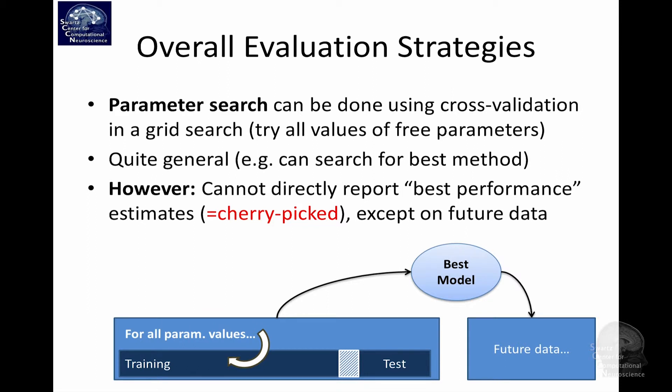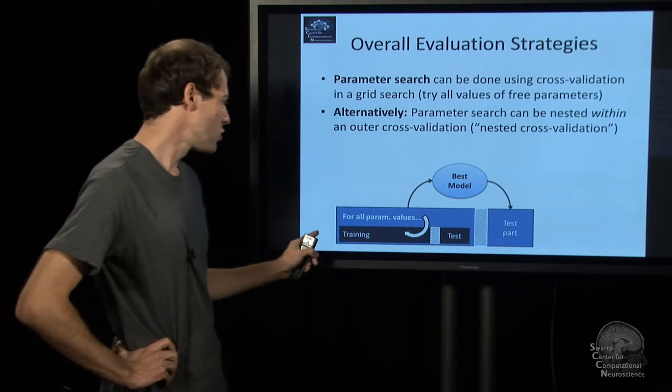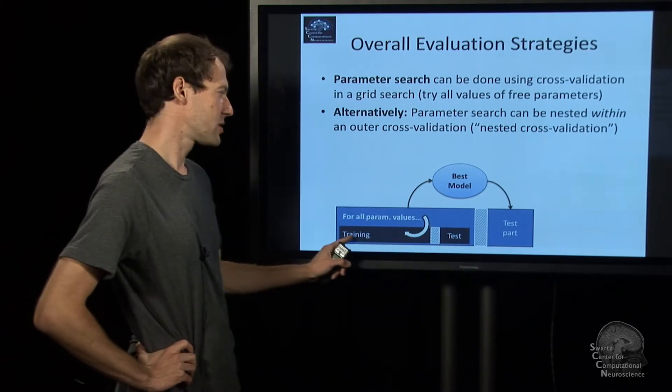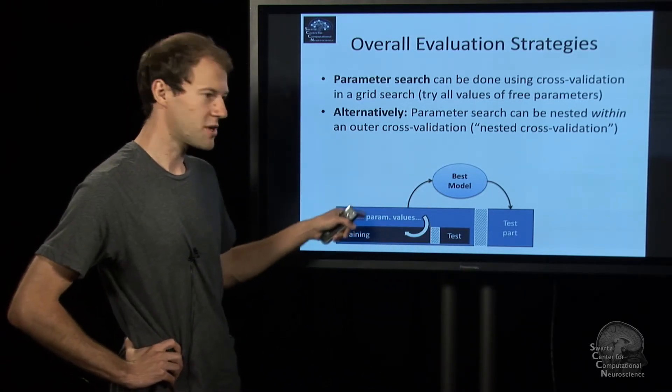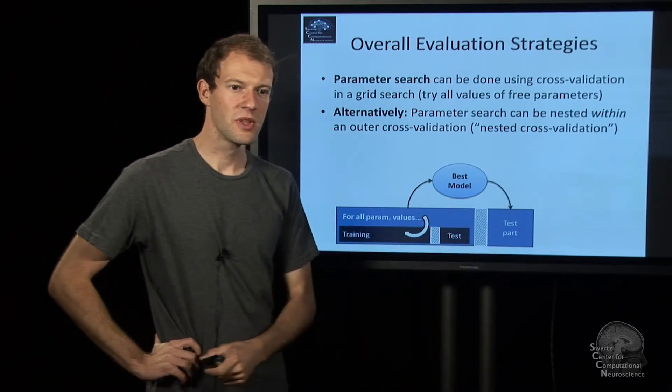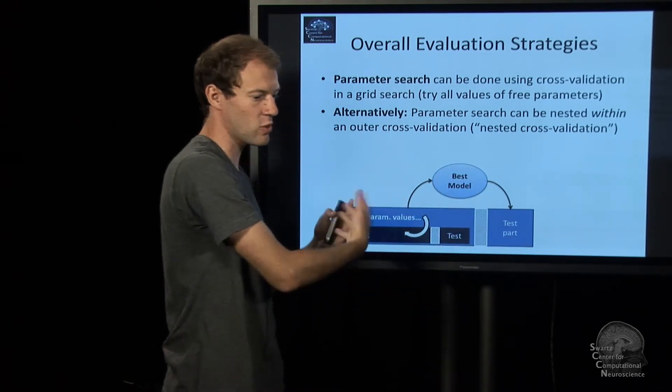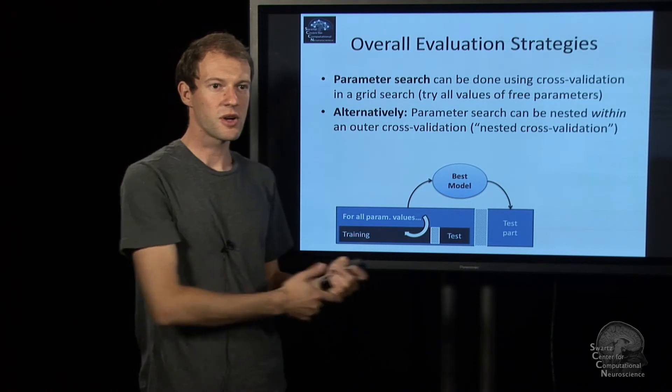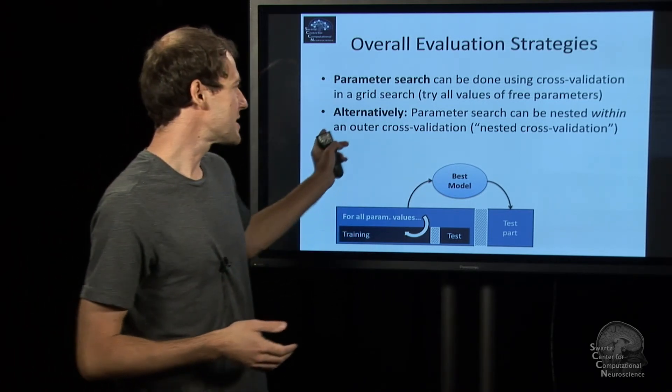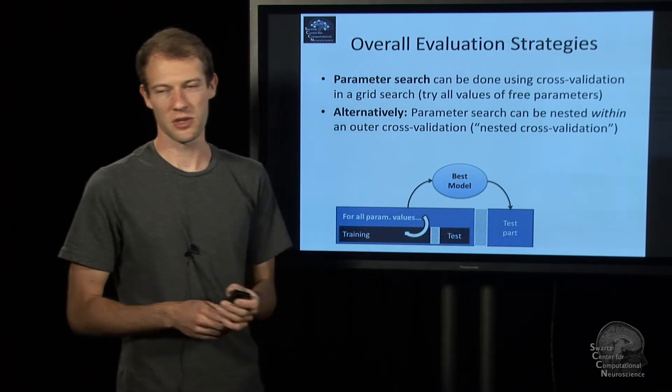And furthermore, if you don't have a separate data set, same story, you can take your data set and chop it up, and basically do parameter search only on the training part, and that involves a little cross-validation that's running in here, and then test on the test part, and then cycle and declare something else the test part, do your cross-validation and parameter search on training part, et cetera. That is called nested cross-validation, because now you have essentially two nested cross-validations running.